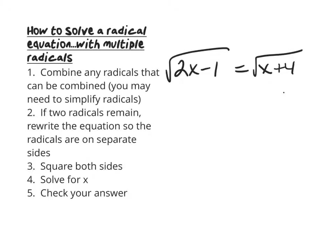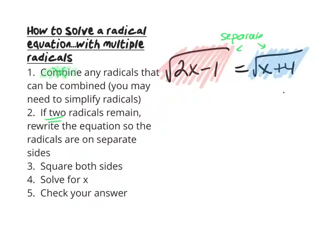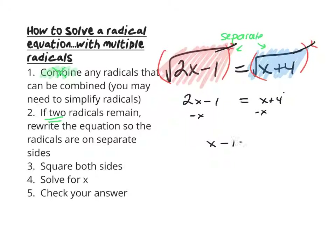In this situation we see two radicals — one on the left and one on the right — but we are not able to combine them as we did in the last example. When two radicals remain and can't be combined, we want to rewrite the equation so the radicals are on separate sides. In this case they already are, so no rewriting is needed. Since both sides are equal, squaring them gives 2x minus 1 on the left and x plus 4 on the right. We subtract x from both sides to get x minus 1 equals 4, then add 1 to get x equals 5.